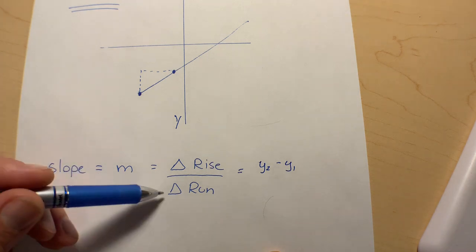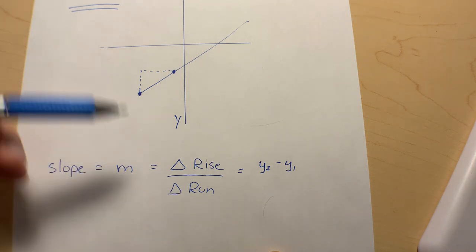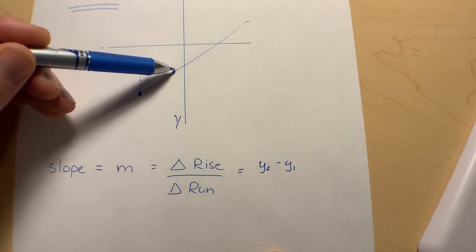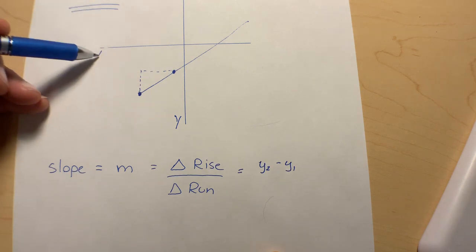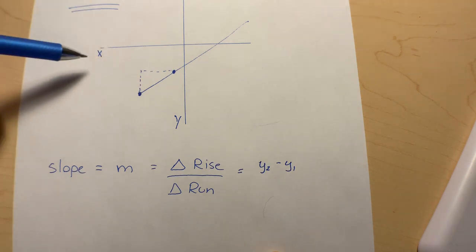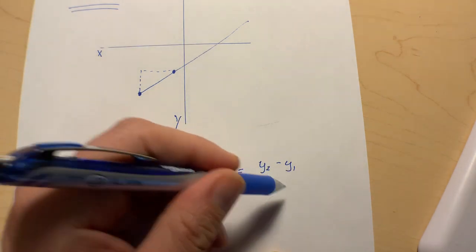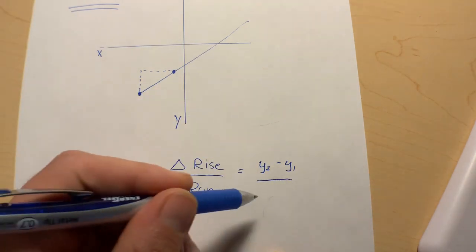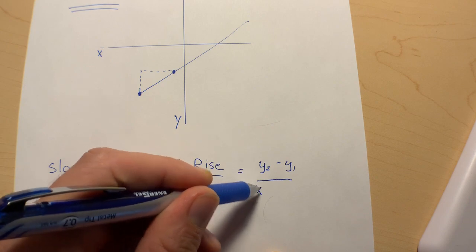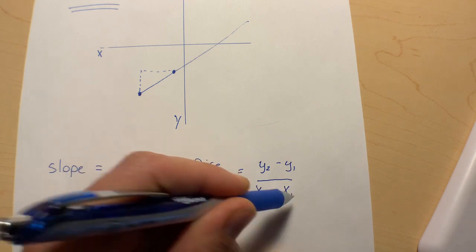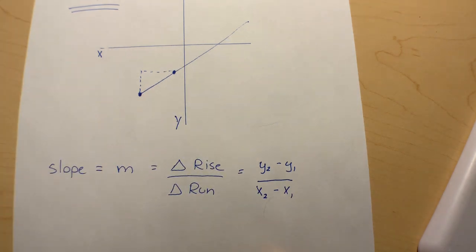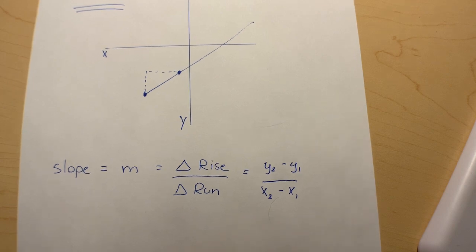The other part is this change in run. Run is this flat movement along the x-axis. So how much does it move left and right? That's run. And to find the difference or the change in run, we go x₂ minus x₁.